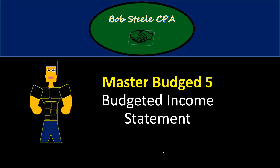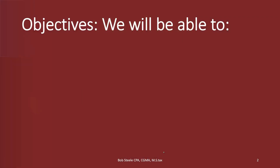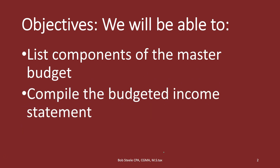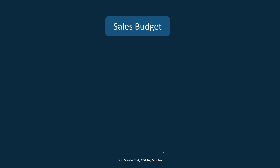Hello, in this lecture we're going to continue with the master budget, part five. We're going to continue with the income statement, so if you haven't looked at the prior budgets, you'll want to look at those — we'll be using parts of them to create the budgeted income statement. After this, we will be able to list components of the master budget and compile the budgeted income statement.